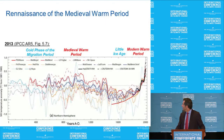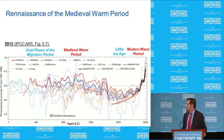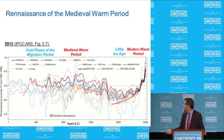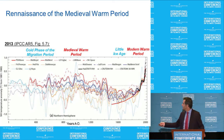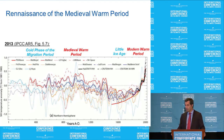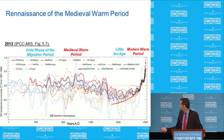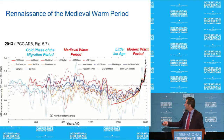Looking at the Medieval Warm Period in the latest IPCC report: it is now more or less accepted — it's no longer a hockey stick. The question is, when CO2 was so low, how could this hot period occur? No climate model can reproduce this. I would only believe models that can actually reproduce the Medieval Warm Period.